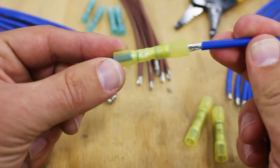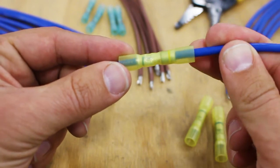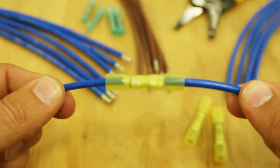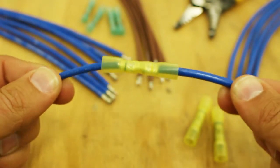We'll repeat the process on the other side with a larger gauge wire. After crimping, perform the tug test to make sure the wires don't pull out.